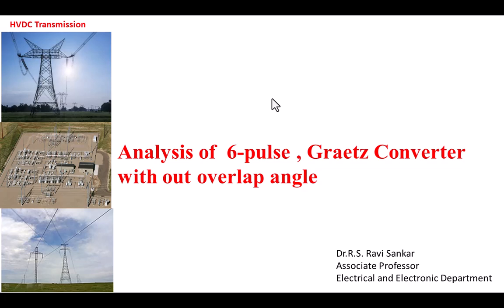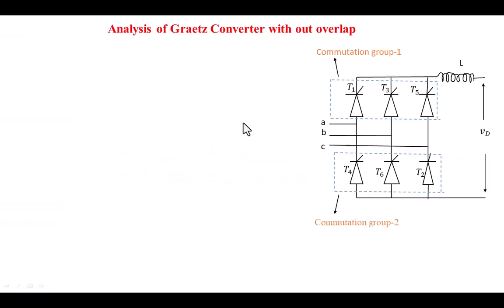In this lecture we are going to discuss the analysis of a 6-pulse converter, or Graetz converter, without overlapping. In the last class we have seen the Graetz converter. This is one commutation group consisting of 3 SCRs: T1, T3, T5. This is another commutation group consisting of T2, T4, T6. The inductor we are keeping at the DC side to reduce harmonics in the DC current — it is nothing but a smoothing inductor. This voltage is nothing but the DC voltage.